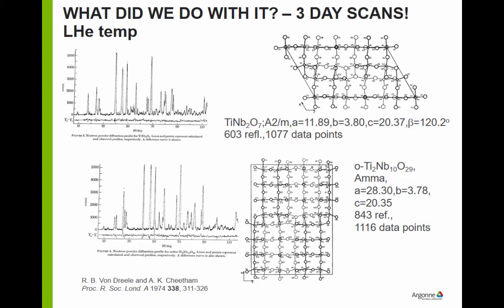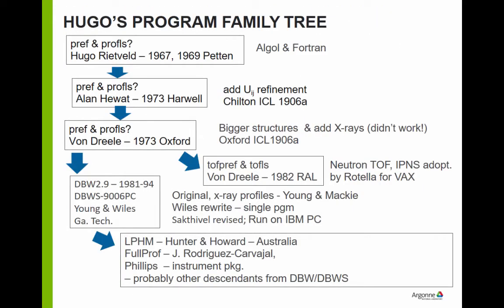These two structures were probably the largest done by powder diffraction for 20 or 30 years after their publication. It's a little bit of a cheat because the structures are two-dimensional — the atoms all lie on mirror planes, so one parameter is fixed and you just have two variables for each atom. But we found out where the niobiums are. That program is the one Alan Hewitt modified from Hugo's original, first written in Algol and then Fortran. Alan had added refinement of anisotropic temperature factors.